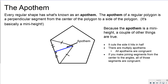Because it's a mini height, the apothem cuts the side it hits in half. There are multiple apothems in each polygon, and if you draw joining segments from the center to the vertices — not the apothems — all those segments are congruent. The ones marked with a single dash on screen are similar to radii and are congruent to each other.